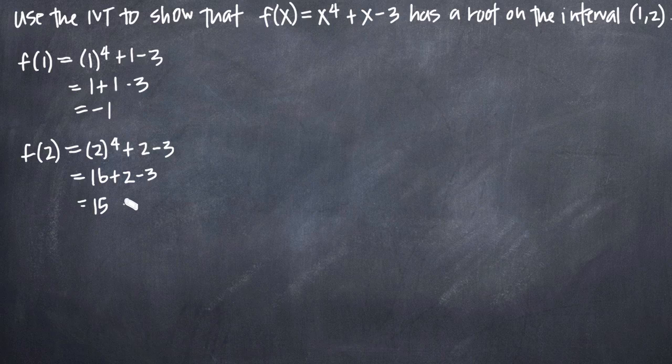Now, without thinking about it too much, we could assume that since the function has a negative value at one end of the interval at 1 and a positive value at the other end at 2, the graph has to cross the x-axis at some point in the interval, and therefore the function must have a root. But we haven't really proven it, and the only way we can prove it is with the intermediate value theorem.